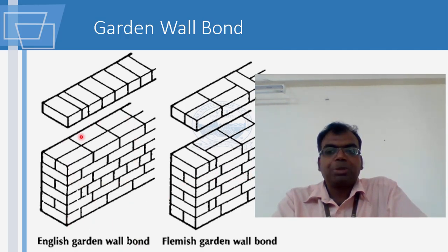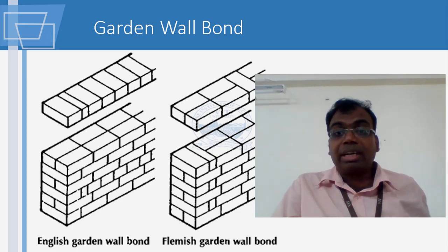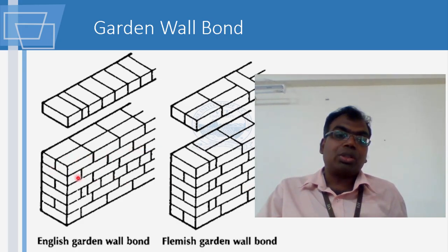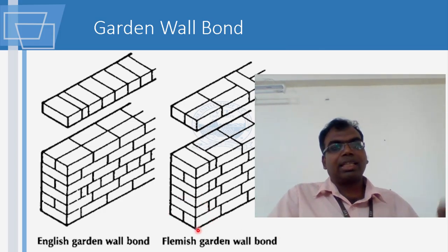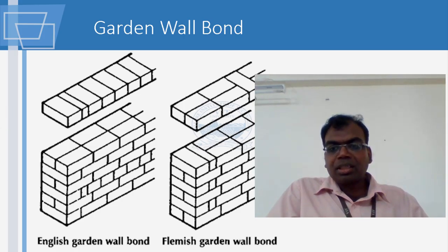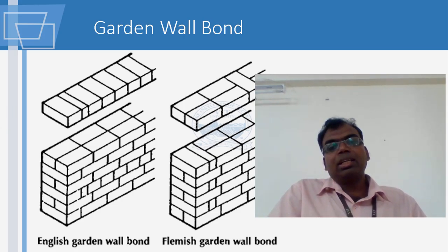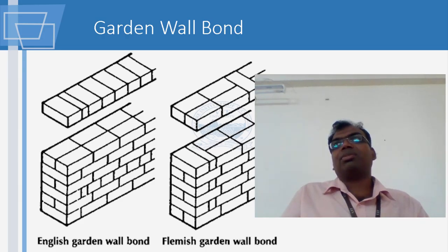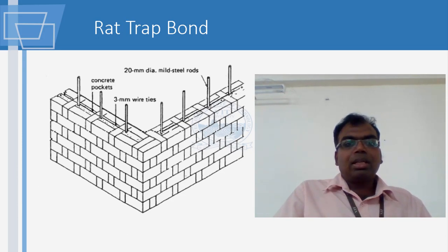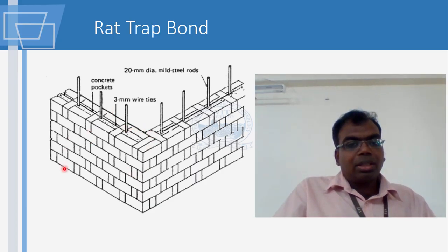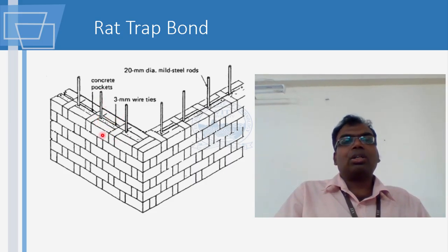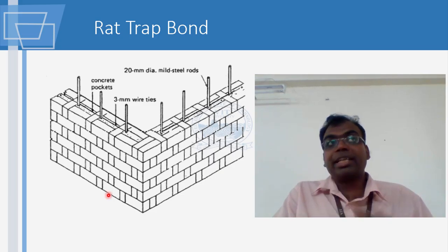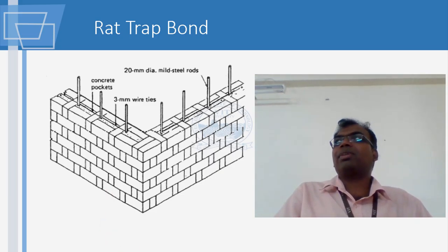The next type is the garden wall bond. You have a queen closer kept here to get the arrangement in place. Usually when you go for the English bond, you will have every three courses of stretchers for every course of header. And in the Flemish bond, you will find one header for every three stretchers.